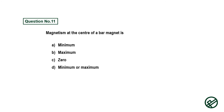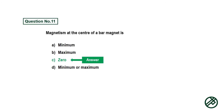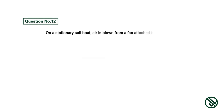Question number eleven: Magnetism at the center of a bar magnet is — option A: minimum, option B: maximum, option C: zero, option D: minimum or maximum. Answer is option C: zero.